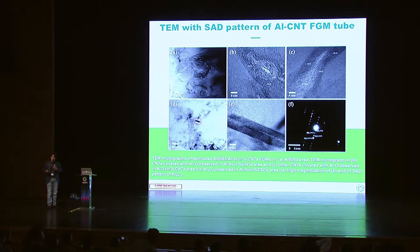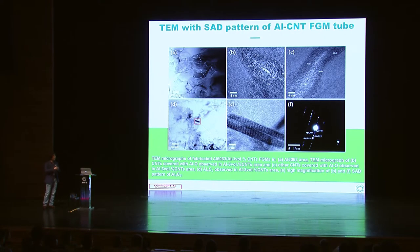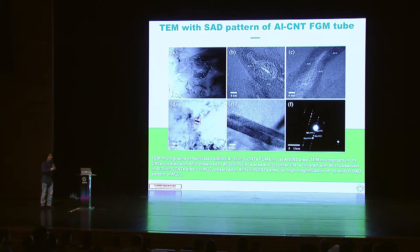In TEM analysis, we found a small amount of aluminum carbide. Aluminum carbide is generally not a good material for electrical or thermal applications, but in our case — mechanical application — even in small nano-sized amounts, well distributed, it provides an additional strengthening effect. So in our case, I can say it does not matter.